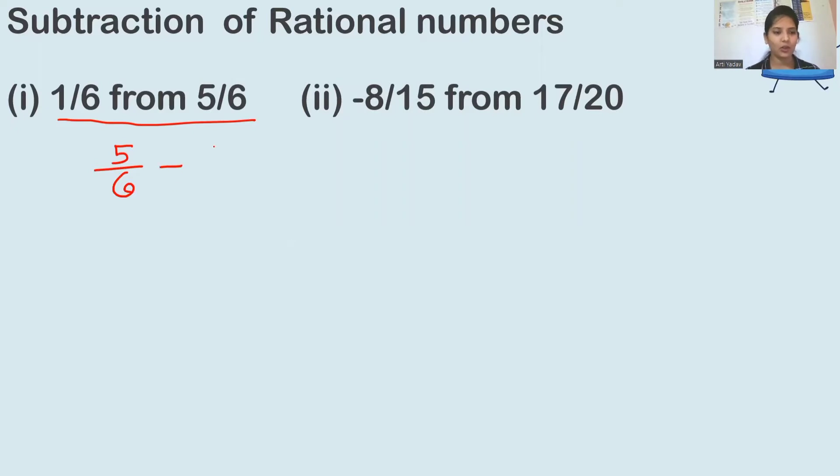Then we will subtract 1 by 6 from it. Here the main condition is that denominators are same. Denominators are same, so this is quite easy. Denominators are same, they are common, so we can take common denominator as 6.